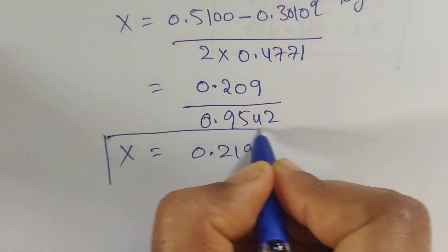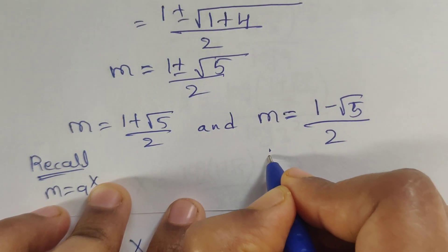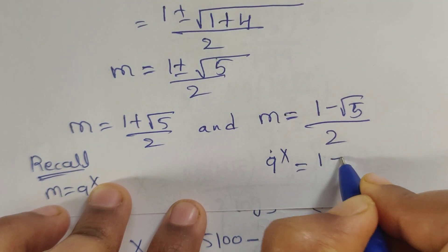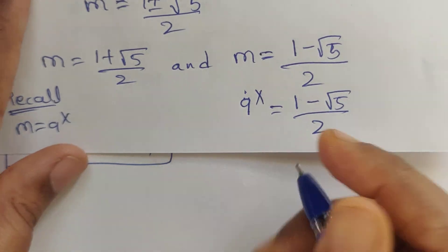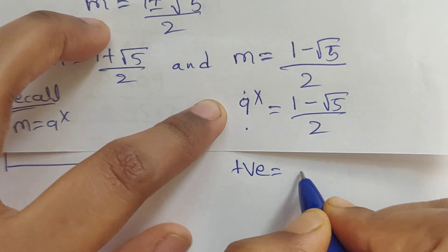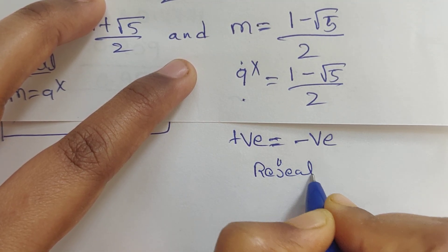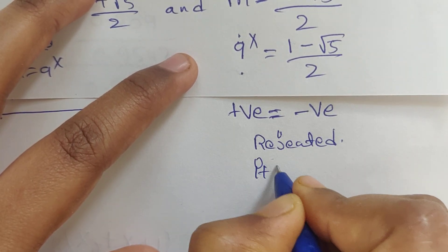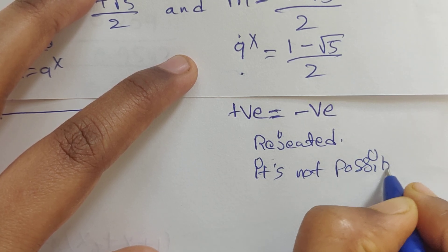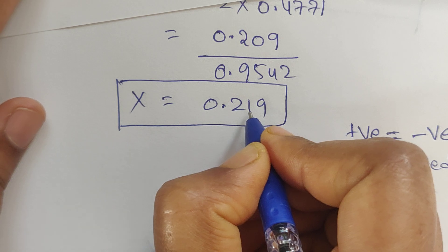So this is the x value. Now for the second solution, 9 to the power of x equal to 1 minus square root of 5 divided by 2 — since 9 to the power of x is always positive and this gives a negative value, it is rejected. It's not possible. So this is the only solution: x equal to 0.219 is the answer.